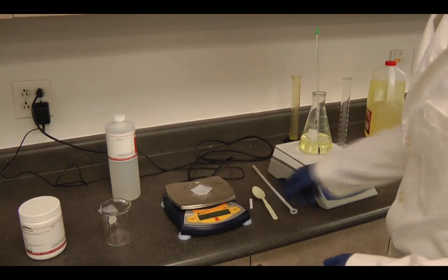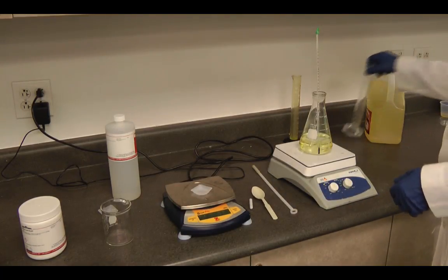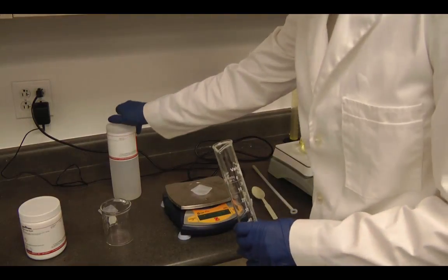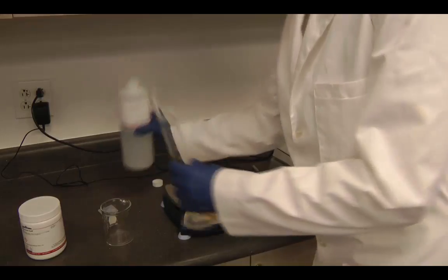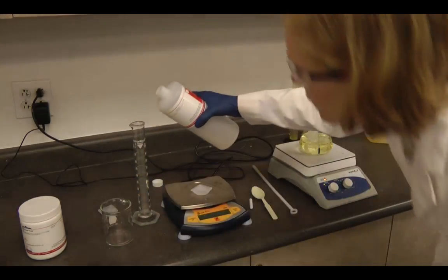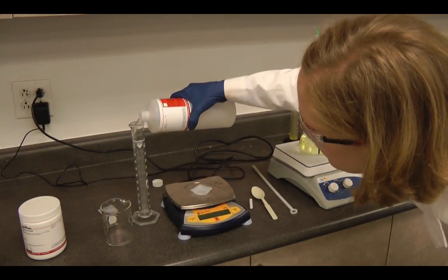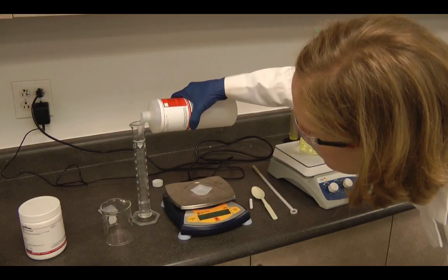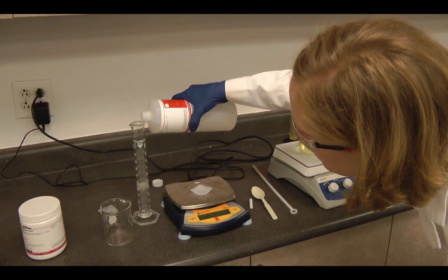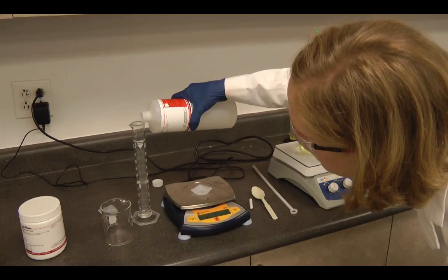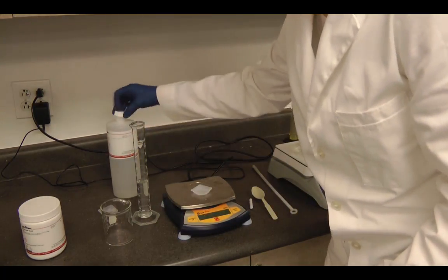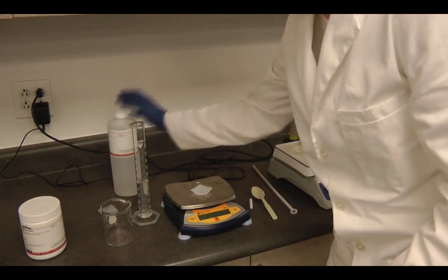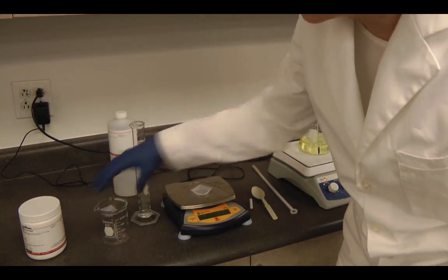So first thing I'm going to do, now that I've got my oil measured out and heating, is measure out 50 milliliters of methanol. I need my graduated cylinder to do this. And I'm going to place this 50 milliliters into a beaker, a 250 milliliter beaker.